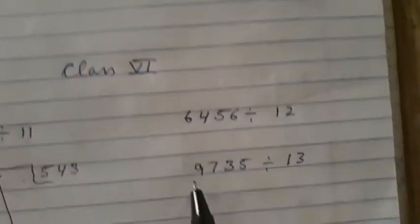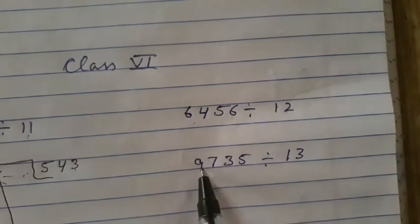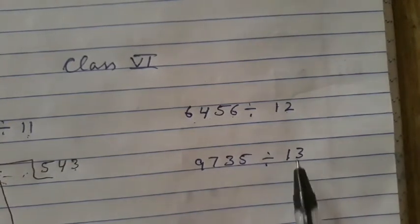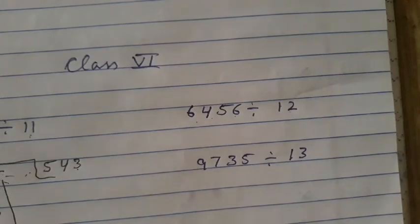Now you will do 6,456 divided by 12 and 9,735 divided by 13. Now, from 30th June, you will do summer vacations.